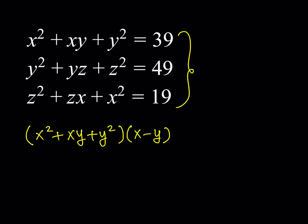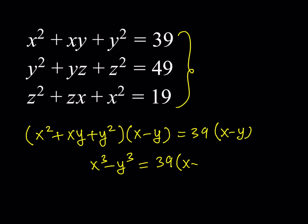When I multiply both sides by x minus y — assuming x does not equal y, because we don't want to multiply by zero — I have to do it on the right-hand side as well. The left-hand side is going to be x cubed minus y cubed. And the right-hand side is just 39 times (x minus y). What is the advantage of doing this? You'll see in a little bit — I'm going to be able to simplify this in a meaningful manner.